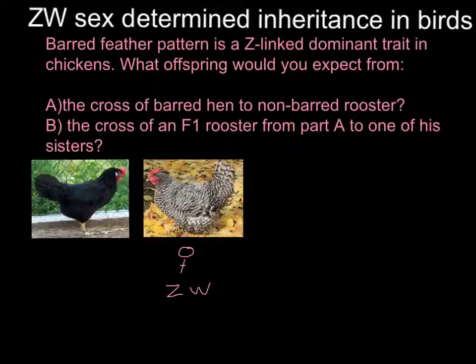In mammals, male gametes — sperm — determine whether it's going to be a boy or a girl. But in birds, they have a system called ZW, and males in this system are homozygous for the Z chromosome.